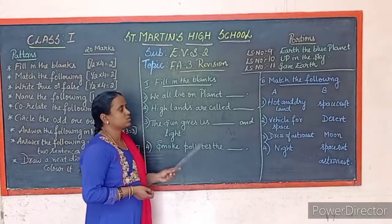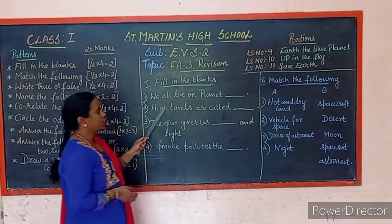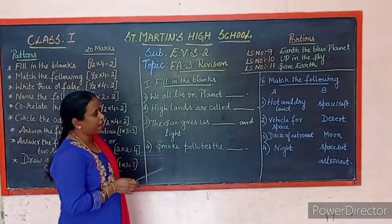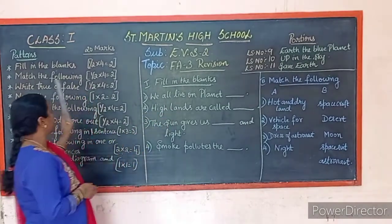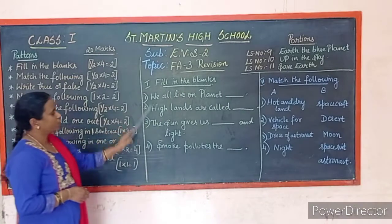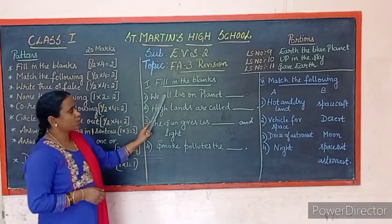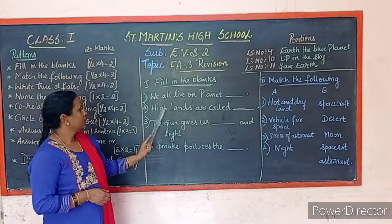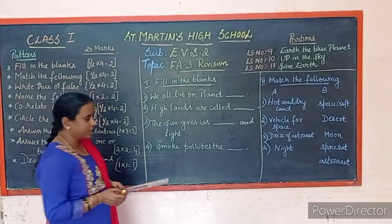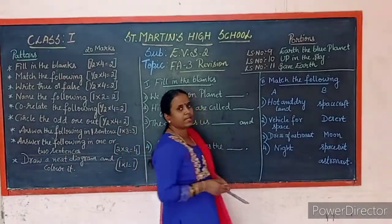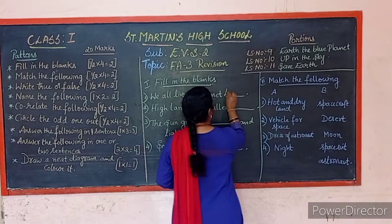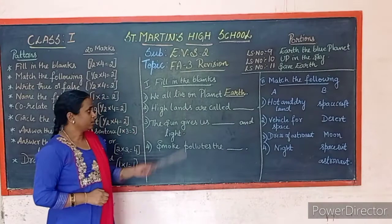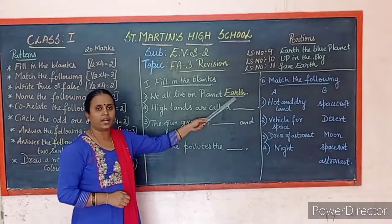Here I have given some examples of how the question paper will be. Fill in the blanks — 4 questions, each carrying half a mark. For example: 'We all live on planet ___.' The answer is Earth. 'Highlands are called ___.' The answer is hills.